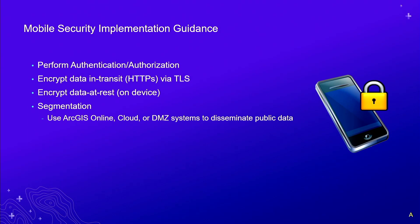At a high level, here are things Esri feels you should consider for mobile security. You have to perform authentication and authorization. Authentication is the process of verifying the login credentials of a mobile user trying to access your internal network — we have a bunch of security options there. Authorization determines what they can do within the network and what datasets they can see or access. Another aspect is whether data is encrypted while in transit — we support HTTPS through TLS, which is an industry standard.